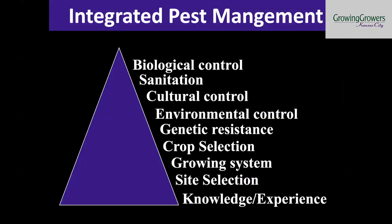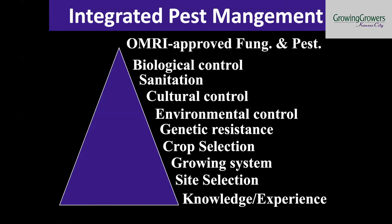So I mentioned integrated pest management earlier. We always want to be thinking about the foundational factors and using therapeutics as a backup. In the case of organic disease or pest management, those are usually OMRI-approved therapeutics — things like sprays — but there are other therapeutics we can use as well.